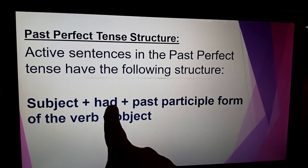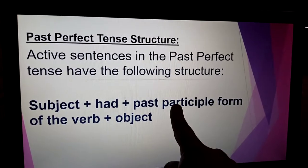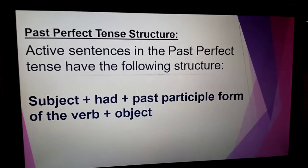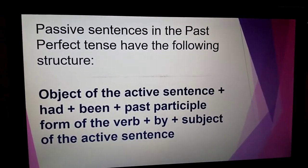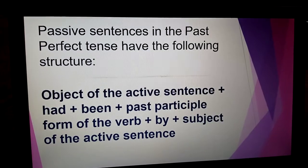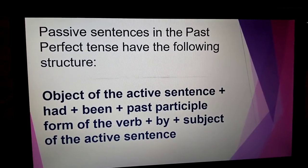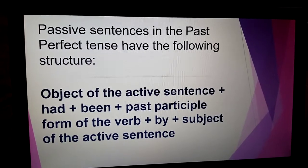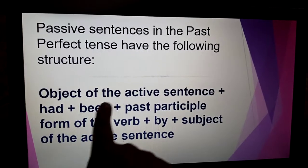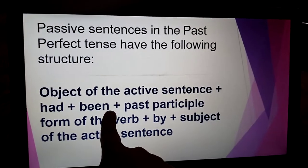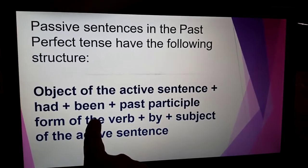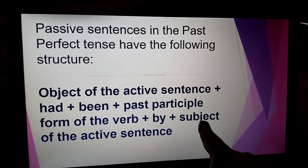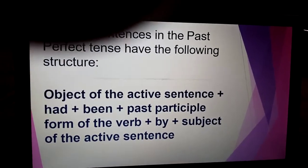First of all, we place the subject, then 'had' as a helping verb, then the past participle form of the verb — that is the third form — then the object. If we have to change this active voice sentence into passive voice, we follow this structure: object of the active sentence + had + been + past participle form of the verb, then 'by', then the subject of the active sentence.